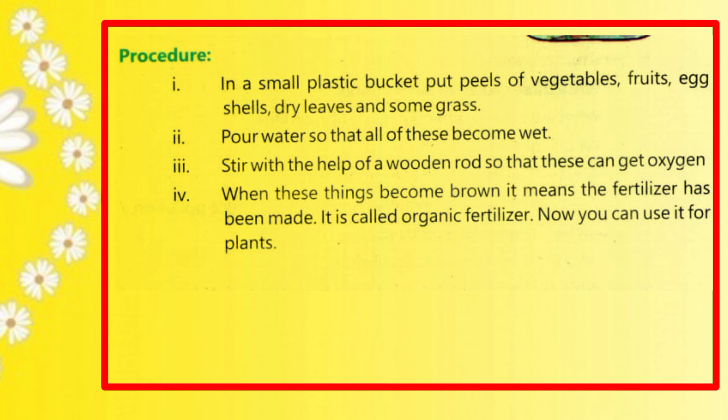Pour water so that all of these become wet. Step 3: Stir with the help of a wooden rod so that they receive oxygen. Step 4: When these things turn brown, it means the fertilizer has been made. This is called organic fertilizer, and you can use it for plants.